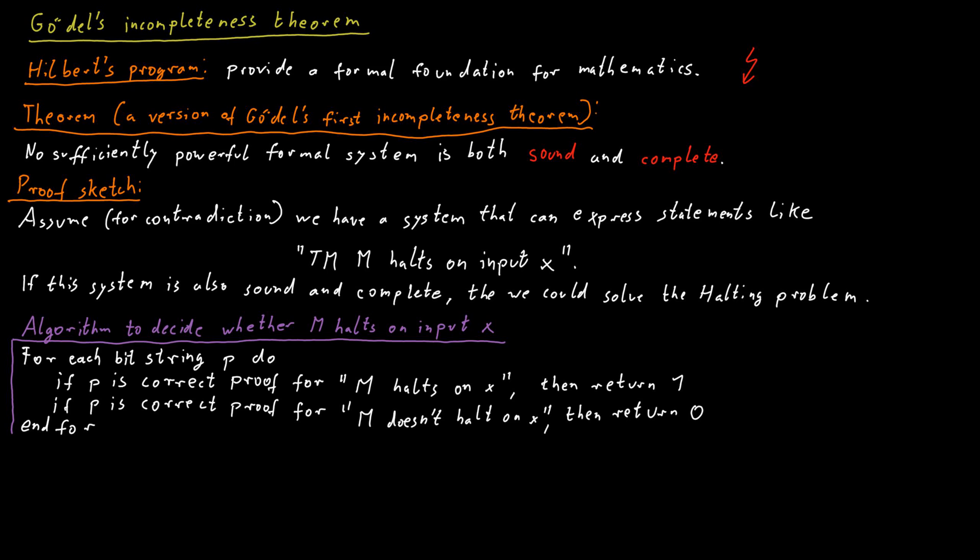This is because either M halts on X or M does not halt on X. So one of these two statements is certainly true. And because our system is complete, all true statements have a proof.